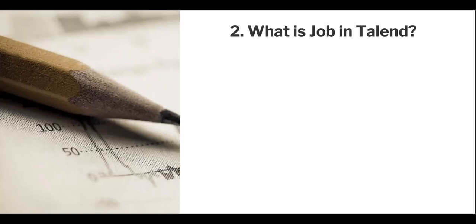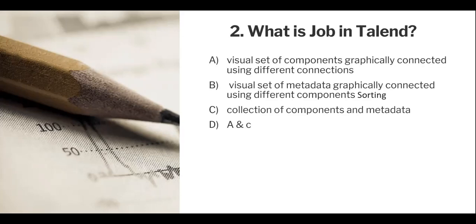The second question: what is a Job in Talend? This is a basic question that sometimes appears in certification exams. The four options are: visual sets of components graphically connected using different connections; visual sets of metadata graphically connected using different components; sorting collection of component metadata; and A and C. A Job is designed using components connected by row or trigger connectors, so option B (visual set of metadata) and option C (collection of component metadata) are wrong. The correct answer is A.